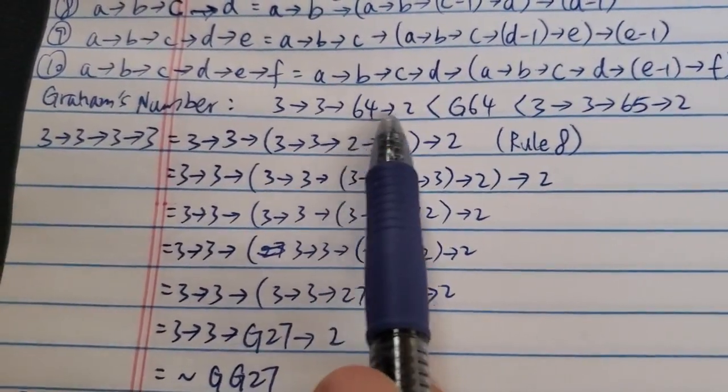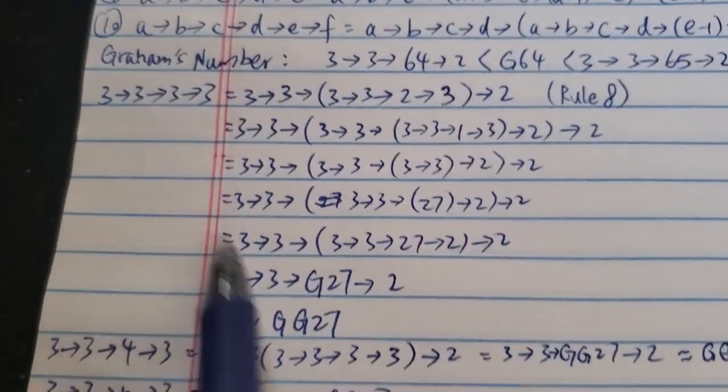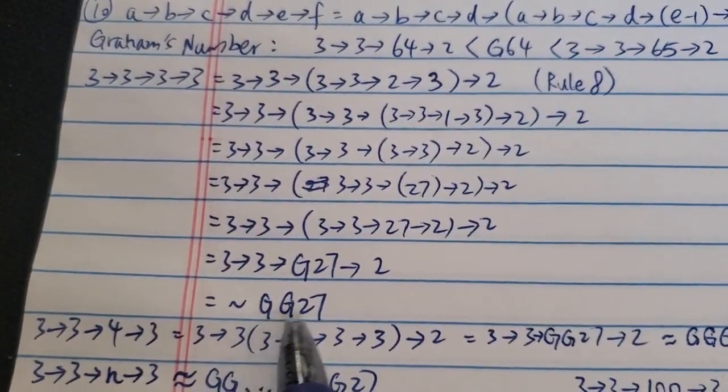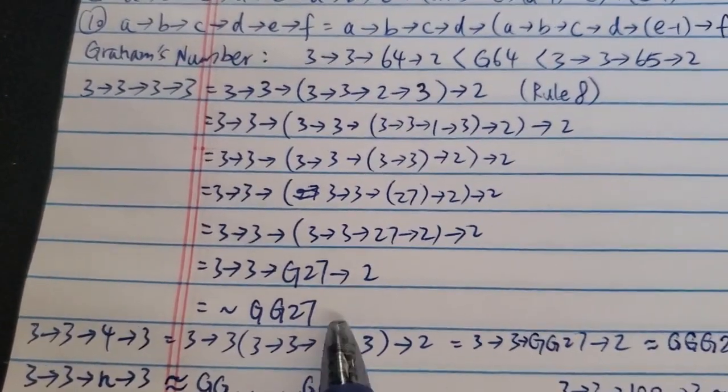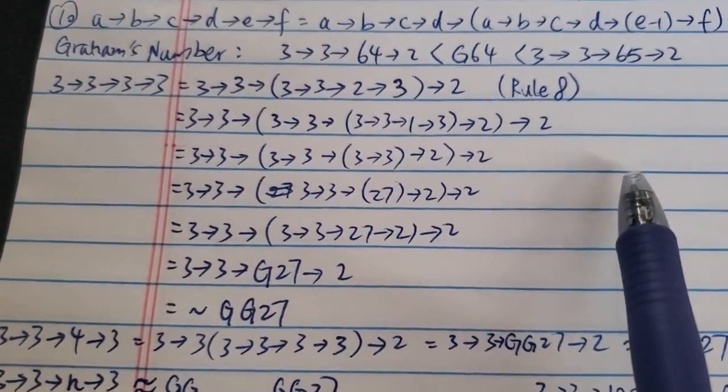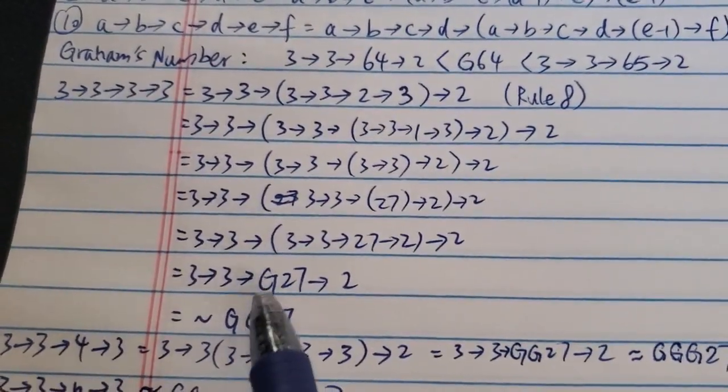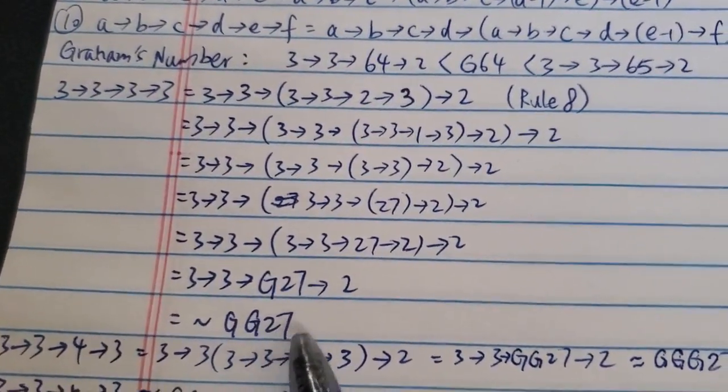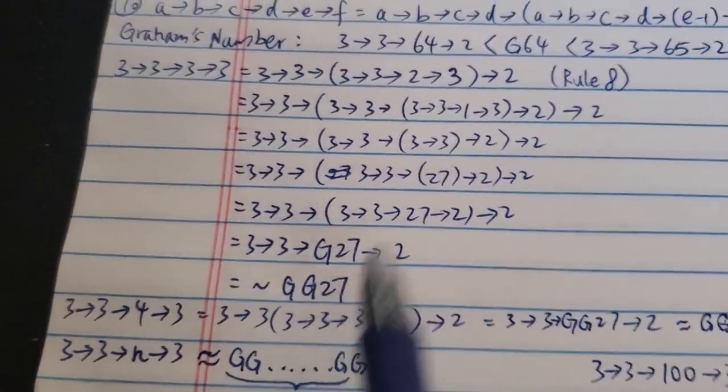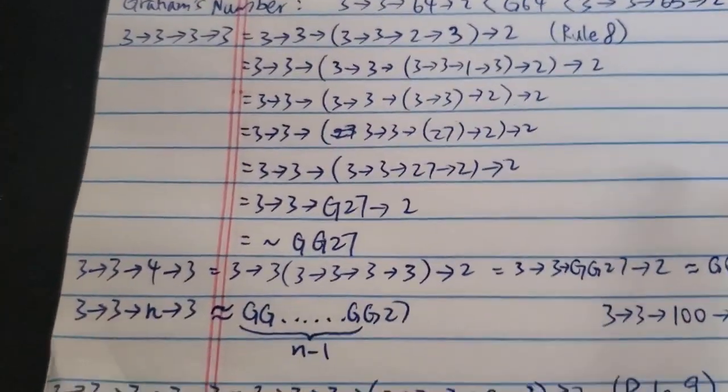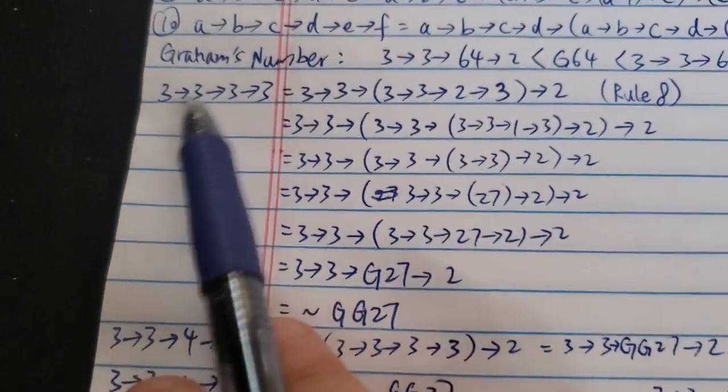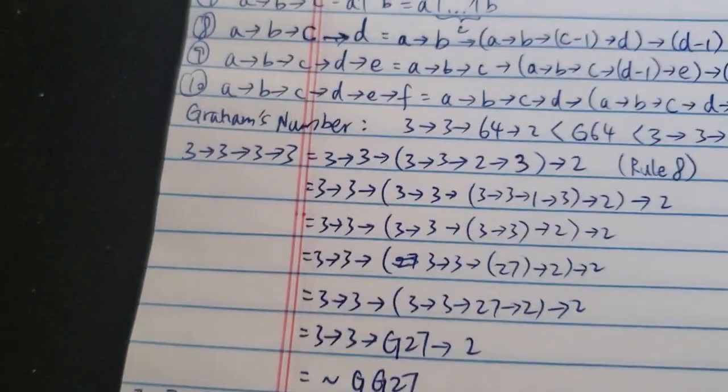G64 is around 3→3→64→2. So at the end, 3→3→3→3→3 is somewhere around G of G27, which is way, way, way bigger than G64. Because Graham's number is G of 64. This is G of G27. So since G27 is way bigger than 64, this is way bigger than Graham's number. So it's pretty crazy. And this is, again, just 4 threes. Very small numbers.